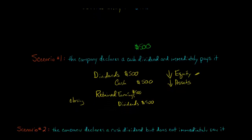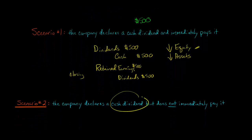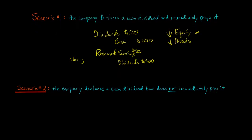Now let's look at the scenario where the company declares a cash dividend but does not immediately pay it out. This is more realistic — a lot of times a company will announce a dividend for the quarter but won't instantly pay it out. So let's again say it's a $500 cash dividend. In this scenario, we're still going to debit the dividends account for $500, but instead of crediting cash, we're going to credit dividends payable for $500.